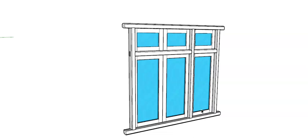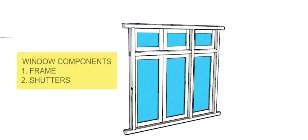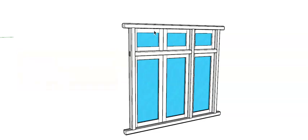Now let us look at the window components. The window consists of basically two components: the frame and the shutters. The frame consists of a top member, a bottom member, two vertical members, an intermediate vertical member, and two horizontal members across.